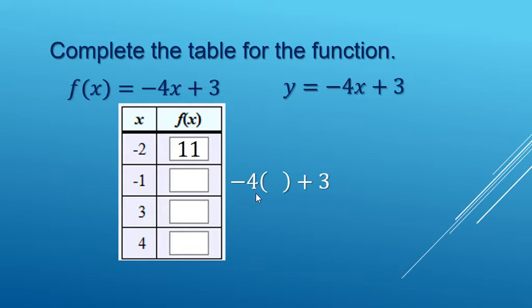The next row, negative 4 times whatever x is plus 3. x is a negative 1. Multiplication first, 4 plus 3 makes 7.